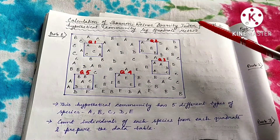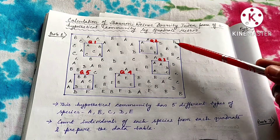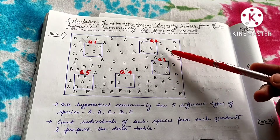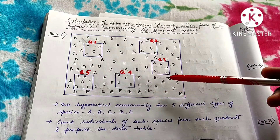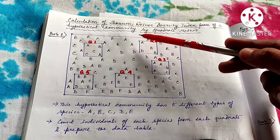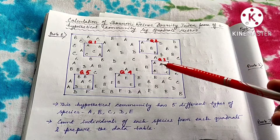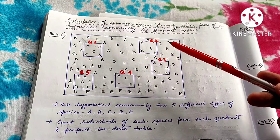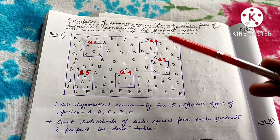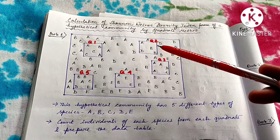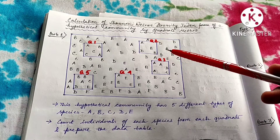This topic may come in your theoretical examination as well as in your practical examination. They will give you a chart like this of a hypothetical community and will mark some quadrats of that community, and you have to find out the Shannon-Wiener diversity index from this hypothetical community by the quadrat method, getting information from the quadrats.